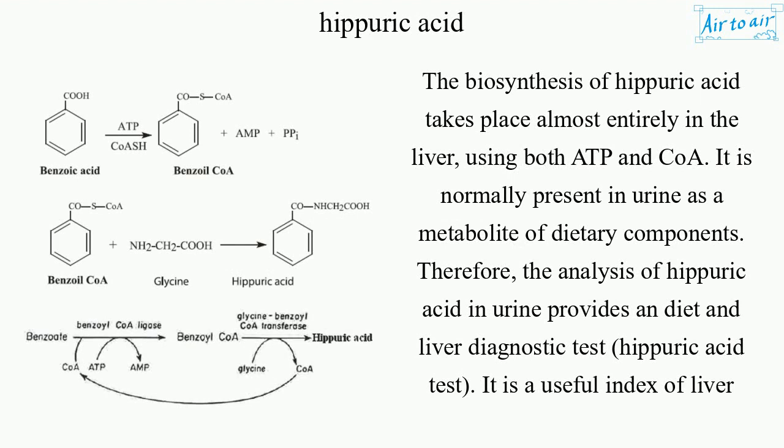The biosynthesis of hippuric acid takes place almost entirely in the liver, using both ATP and CoA. It is normally present in urine as a metabolite of dietary components. Therefore, the analysis of hippuric acid in urine provides a diet and liver diagnostic test, known as the Hippuric Acid Test. It is a useful index of liver function.